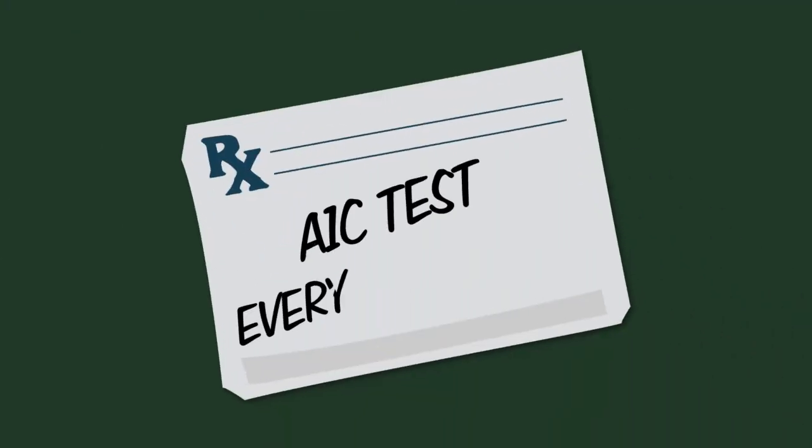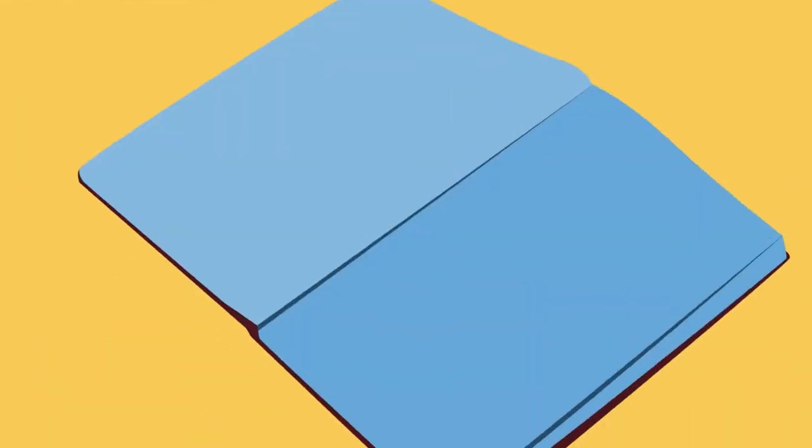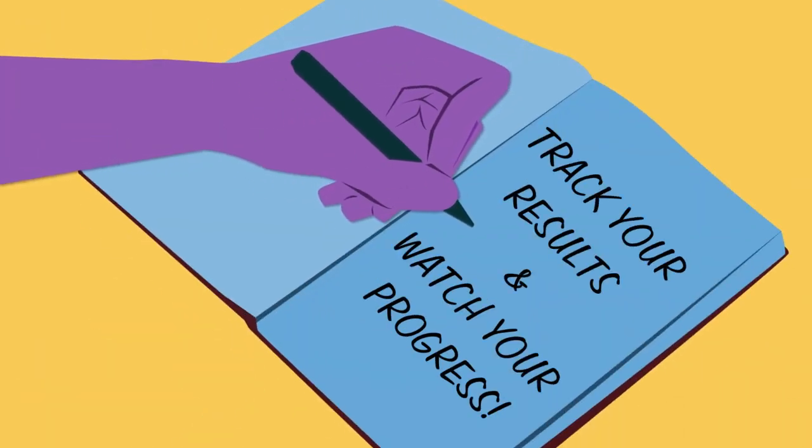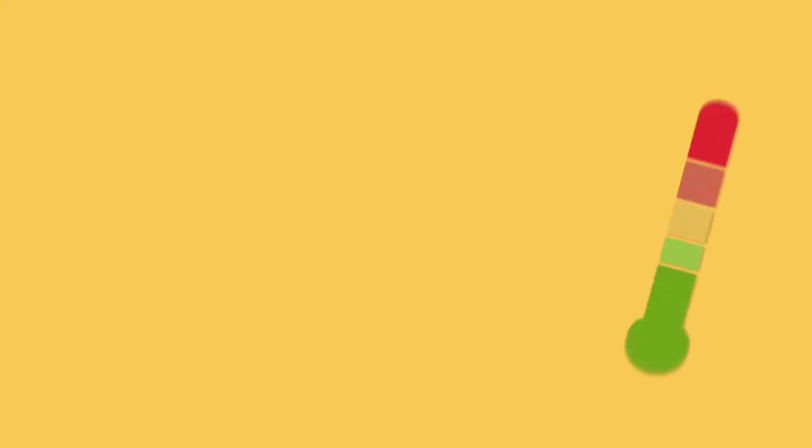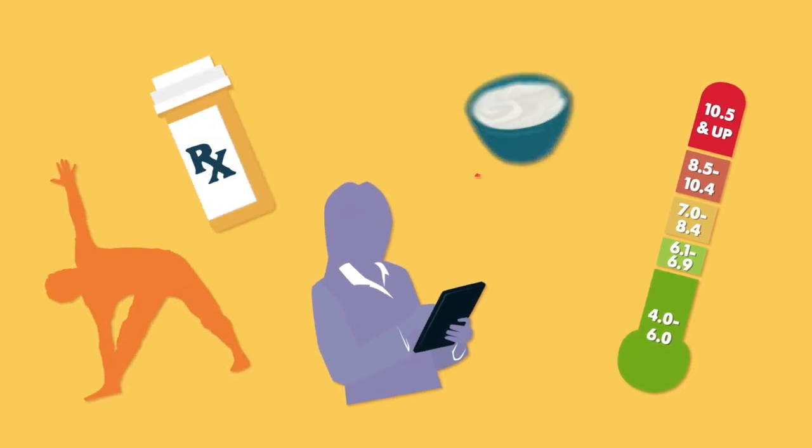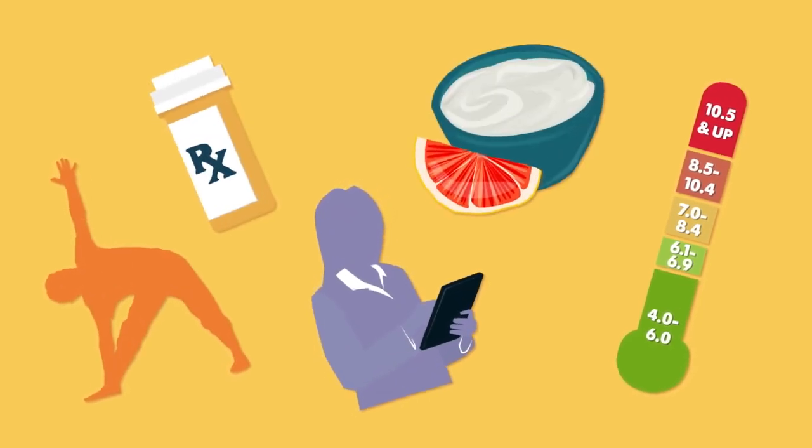Your doctor may do an A1C test every three to six months. Track your results and watch your progress over time. With careful monitoring and some lifestyle changes, you have the power to lower your A1C.